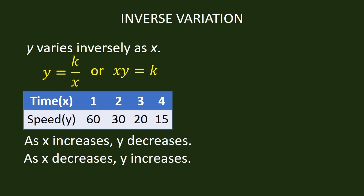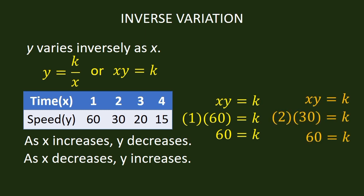This can be shown also using the formula of inverse variation, XY equals K. When X equals 1 and Y equals 60, we have K equals 60. When X equals 2 and Y is 30, K equals 60. And so on, until when X is 4 and Y is 15, K equals 60.